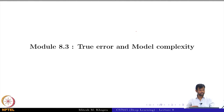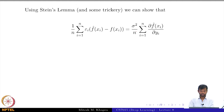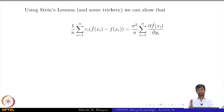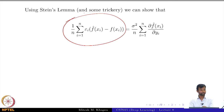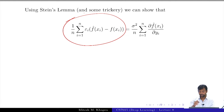Now we will try to see how the true error depends on model complexity. Using Stein's Lemma and some trickery we can show the following. Stein's Lemma is some lemma which tells us that the covariance term which was troublesome is actually equal to this quantity.